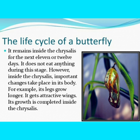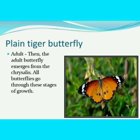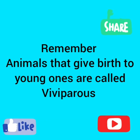Then the adult butterfly emerges from the chrysalis. All butterflies go through these stages of growth. Remember, animals that give birth to young ones are called viviparous, and the animals that lay eggs are called oviparous. Thank you.